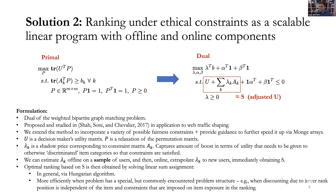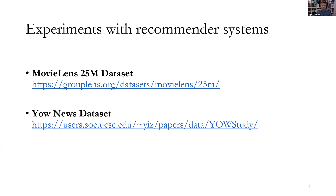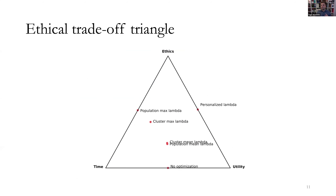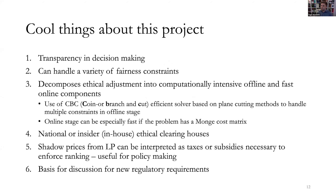We also propose a scalable algorithm for resolving such ranking-under-constraints problems fast using statistical sampling. We experiment with a few datasets with movies and observe different trade-offs. What we see is that there is an inherent trade-off between computation time, the ability to comply with ethical constraints, and the ability to maximize the decision maker's objective. We also evaluated which methods are most closely correct relative to optimal. Those are the highlights — thank you so much for your attention.